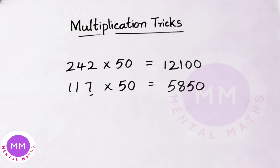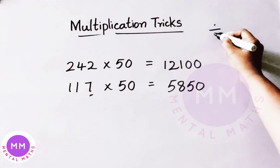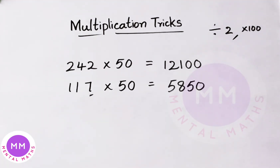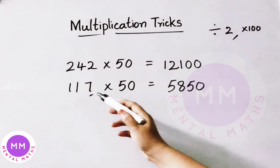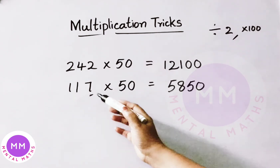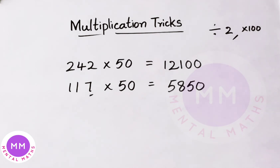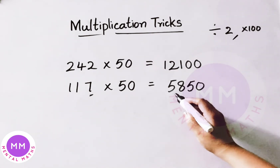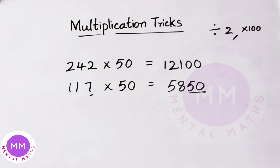Here in these examples, what we have done is: given value first we have to divide by 2, then multiply it by 100 and we get the result when the given number is even. If the given number is odd, take the previous number and write half of its value. Then add 50 at last and you will get the result.